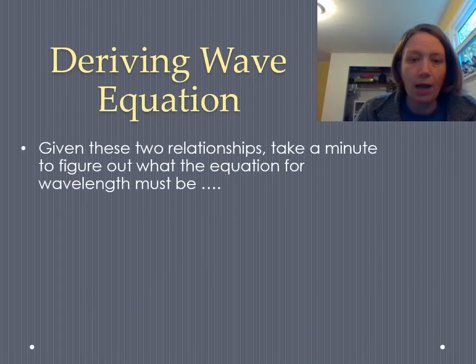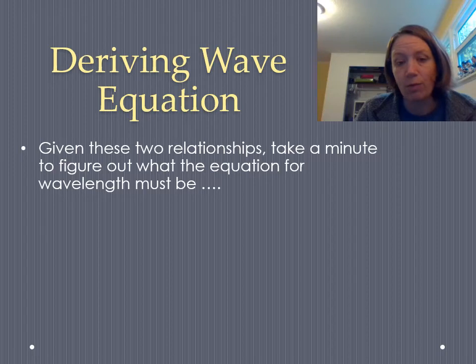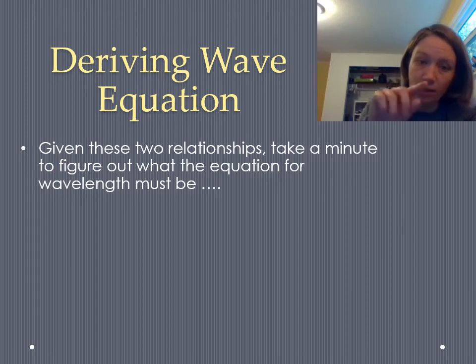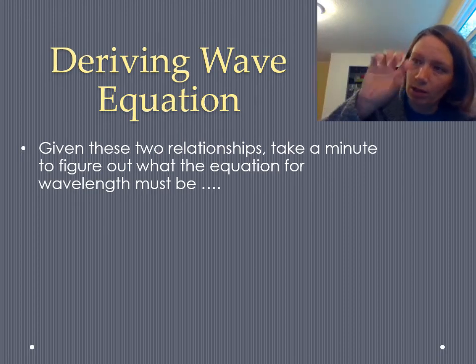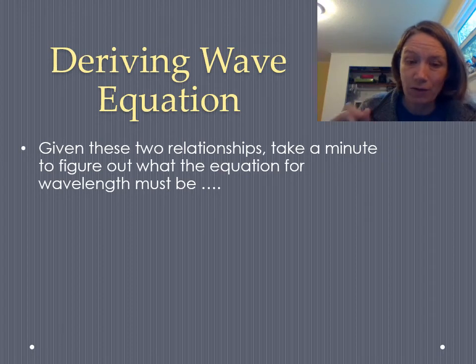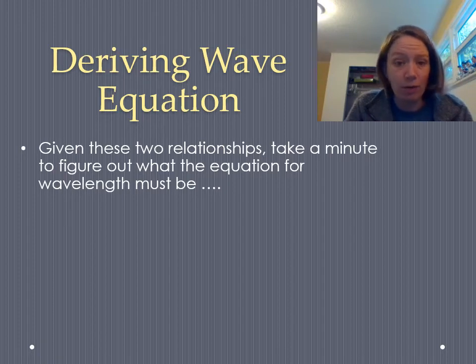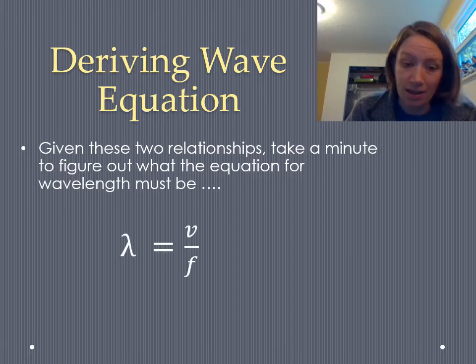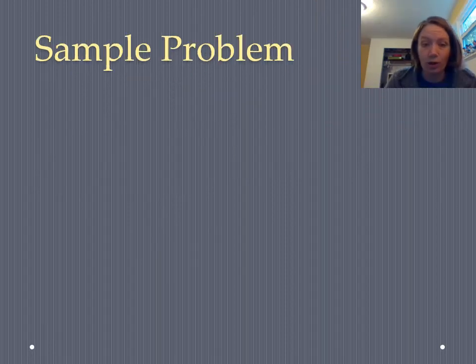Okay, so we now have our two relationships, and you should be able to now come up with a wave equation for those two relationships. Remember, we start with our dependent variable on one side of the equal sign. So wavelength equals, and then we put the linear relationships on the top and the inverse relationships on the bottom. I'm going to ask you to pause the video for a second and see if you can figure it out on your own, because that's a really important skill. Okay, hopefully you're back from your pause. If you did it right, you got this equation right here, lambda equals V over F, which is the wave equation.